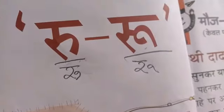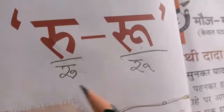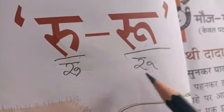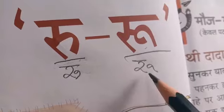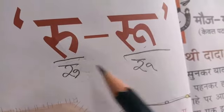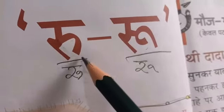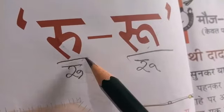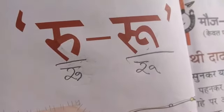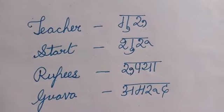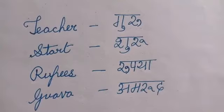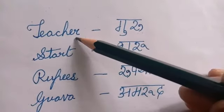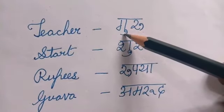Ru me chhoti U ki matra is a bit short. So don't be confused — there are some words, kindly see to it. Teacher, teacher means Guru.